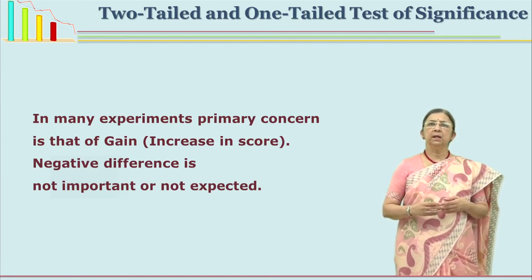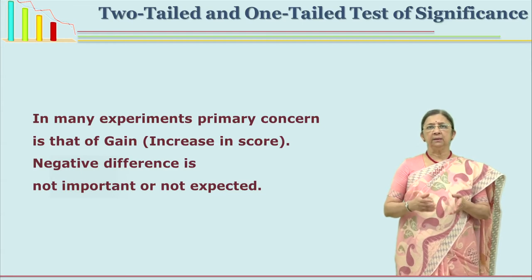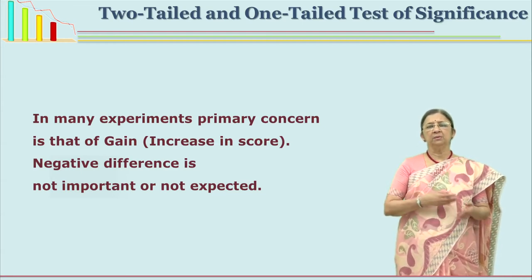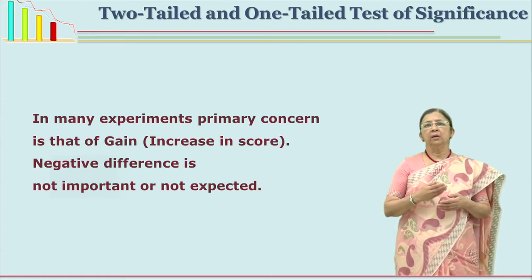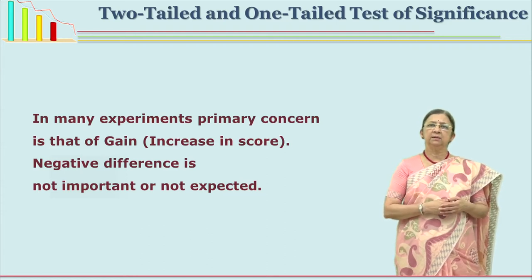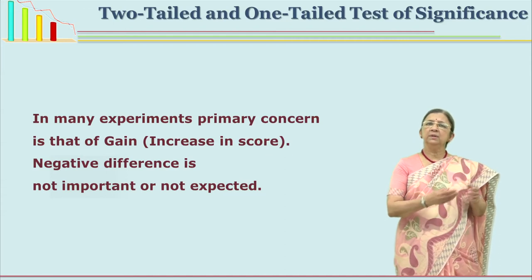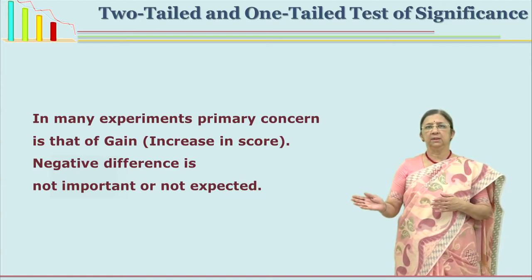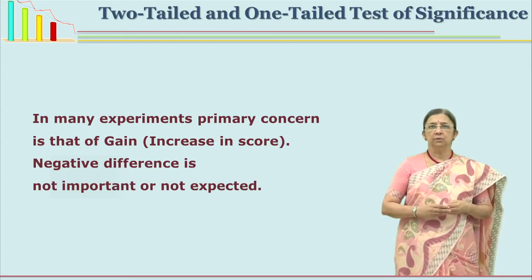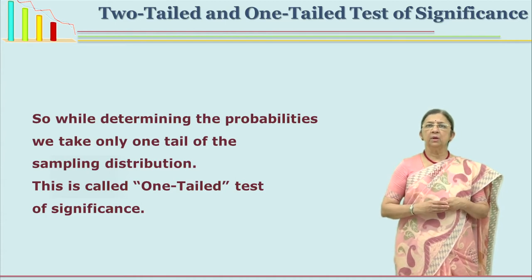When the primary concern of the researcher is gain — for example, giving an independent variable such as a reading comprehension program for 2-3 months — you are sure it will increase but not decrease, since you are providing additional inputs. You are not interested in the other end (decrease). Similarly, if you want to reduce anxiety, you are only interested in the negative side — reduction. In these cases, the researcher is interested only in one side of the distribution. This is called a one-tailed significance test.